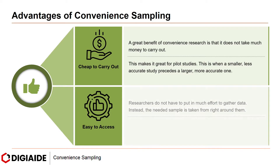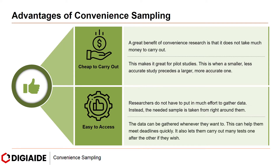Next: easy to access. Researchers do not have to put in much effort to gather data. Instead, the needed sample is taken right from around them. The data can be gathered whenever they want to. This can help them meet deadlines quickly. It also lets them carry out many tests one after the other if they wish.